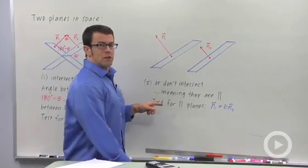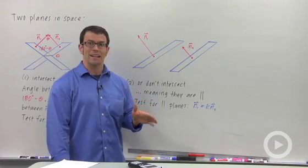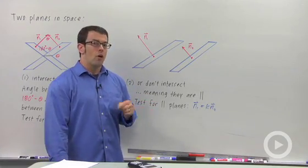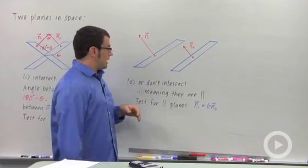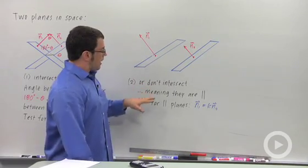What if they don't intersect? Well, if two planes don't intersect, then they have to be parallel. Or, I mean, they do intersect and they intersect everywhere—they're the same plane. If they don't intersect at all, they're parallel.